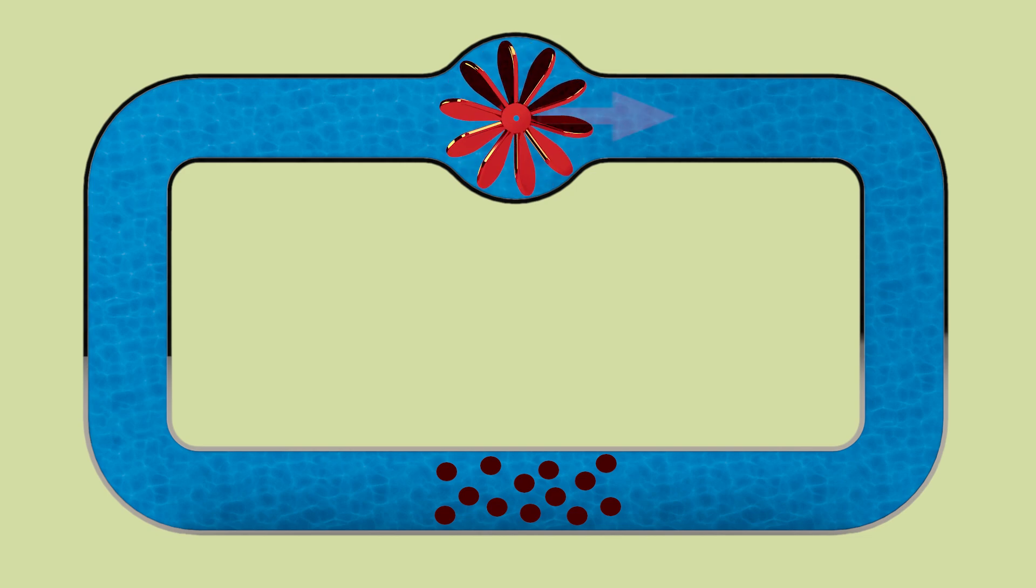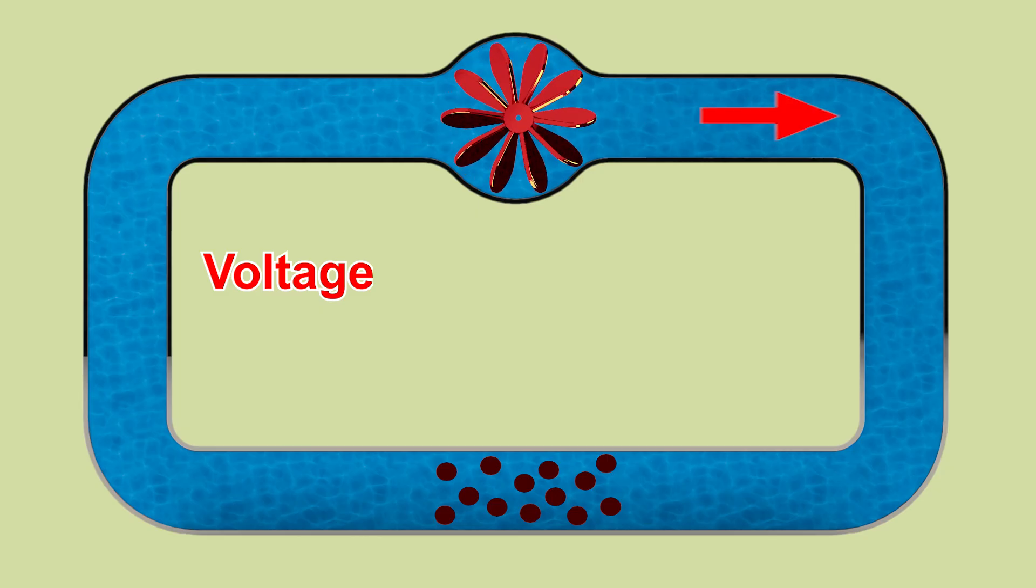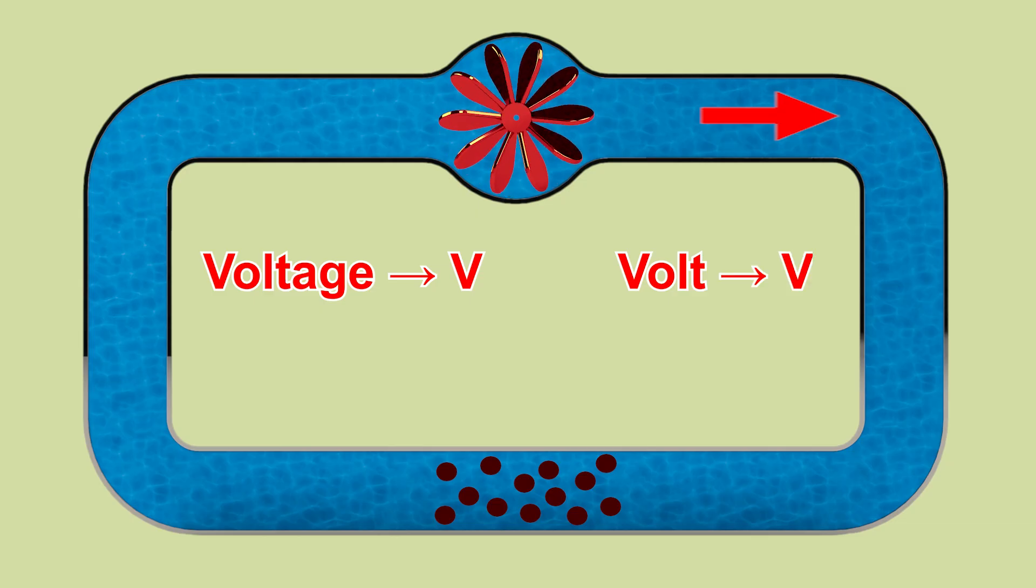The pressure that pushes the water forward is called voltage in electricity, is shown with the letter V, and its unit is volt, also written as V.